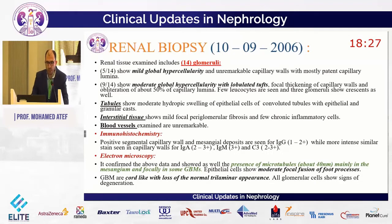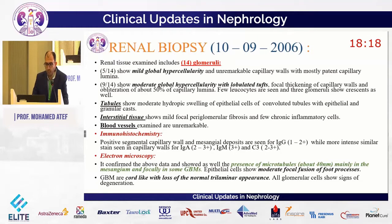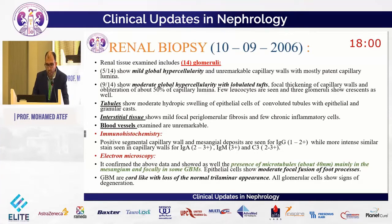Tubules showed moderate hydropic swelling of epithelial cells of proximal tubules with epithelial and granular casts. Interstitial tissue showed mild focal periglomerular fibrosis and a few chronic inflammatory cells. Blood vessels were unremarkable. Immunohistochemistry showed segmental capillary wall and mesangial deposits: IgG 1–2 plus, and more intense similar staining in capillary walls for IgA 2–3 plus, IgM, and complement C3.